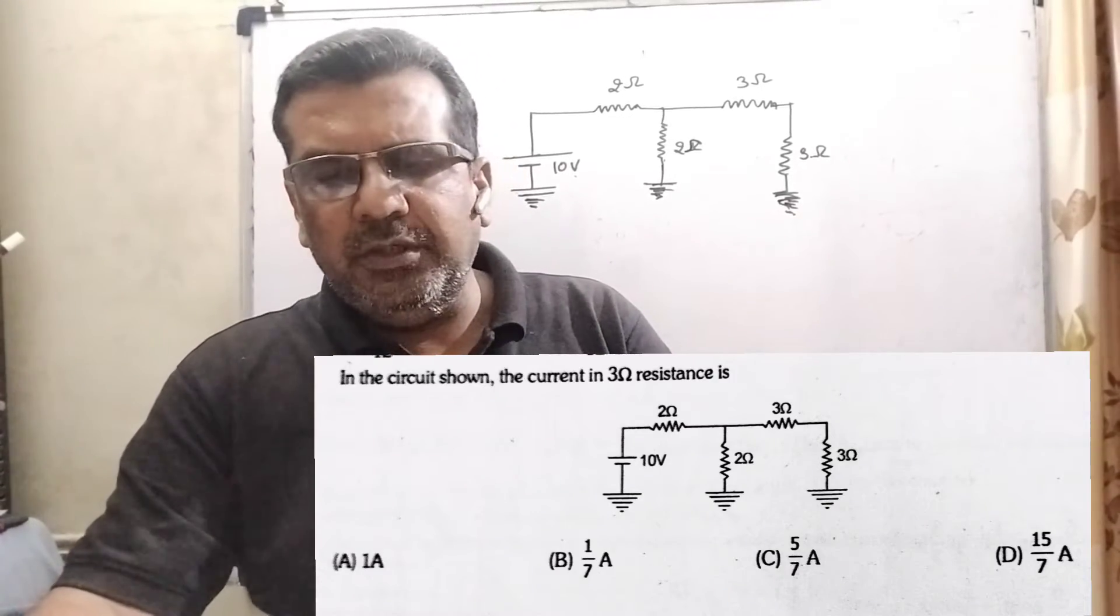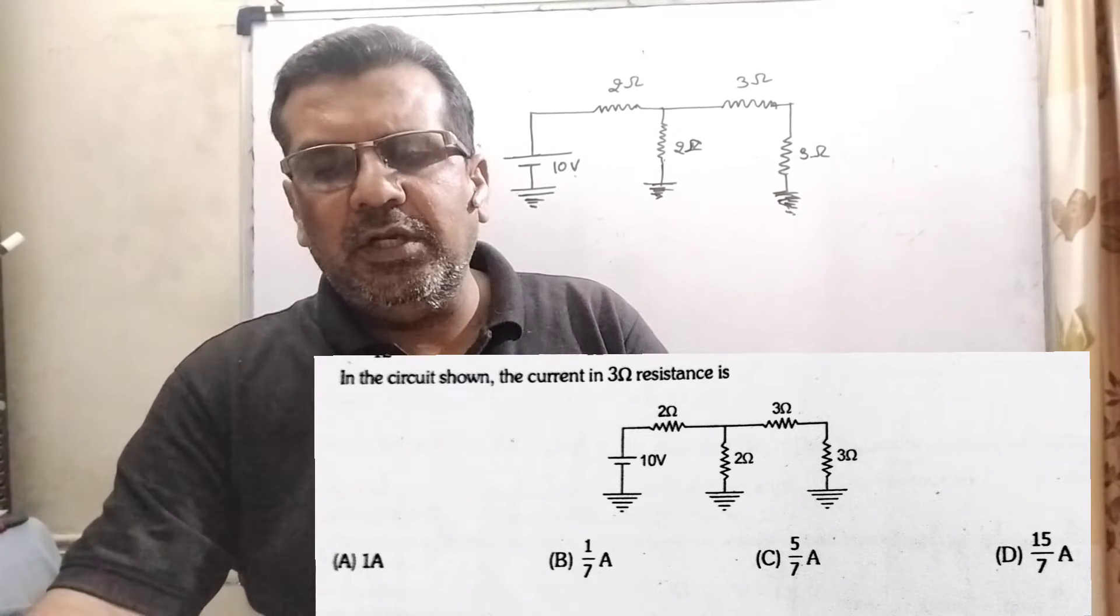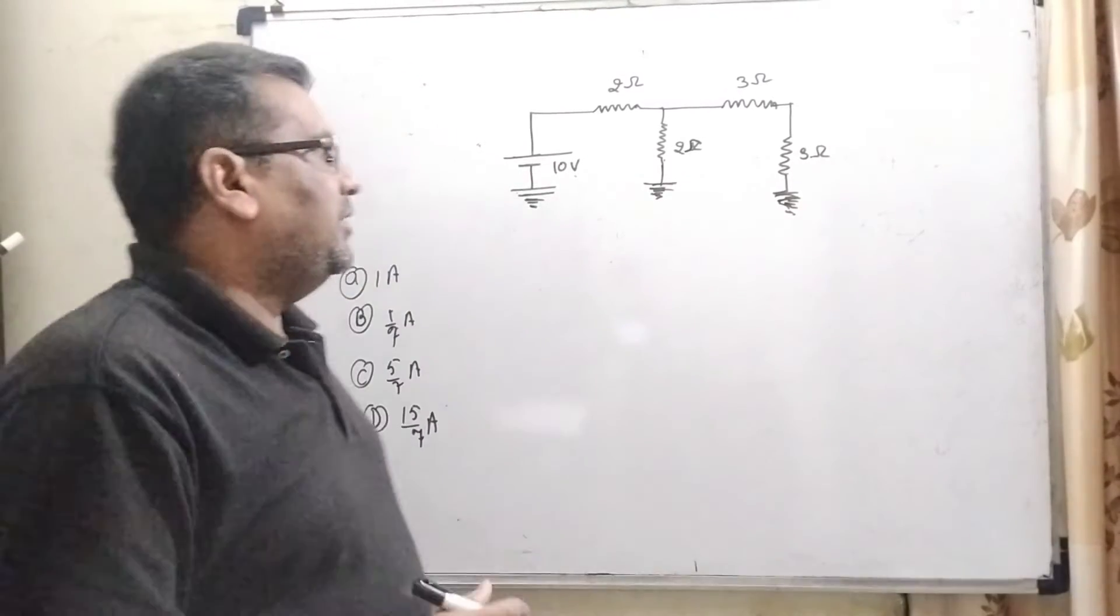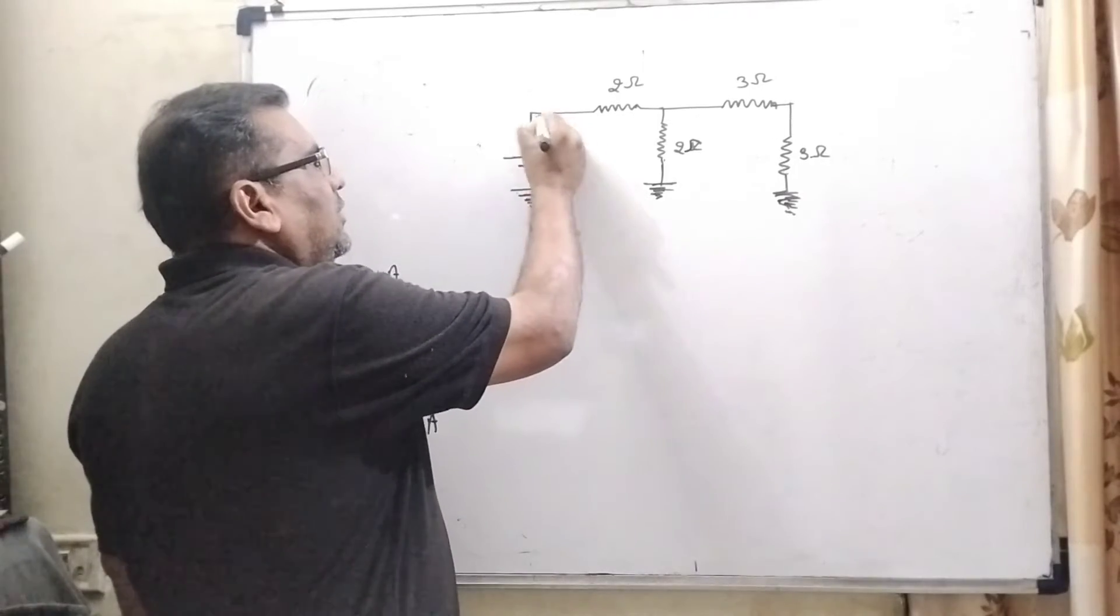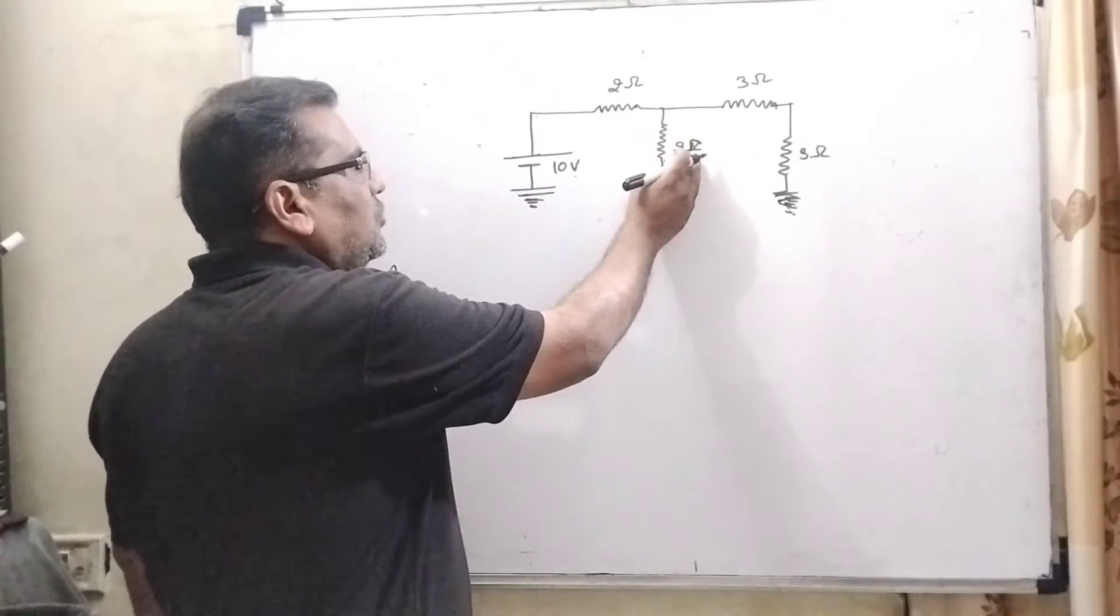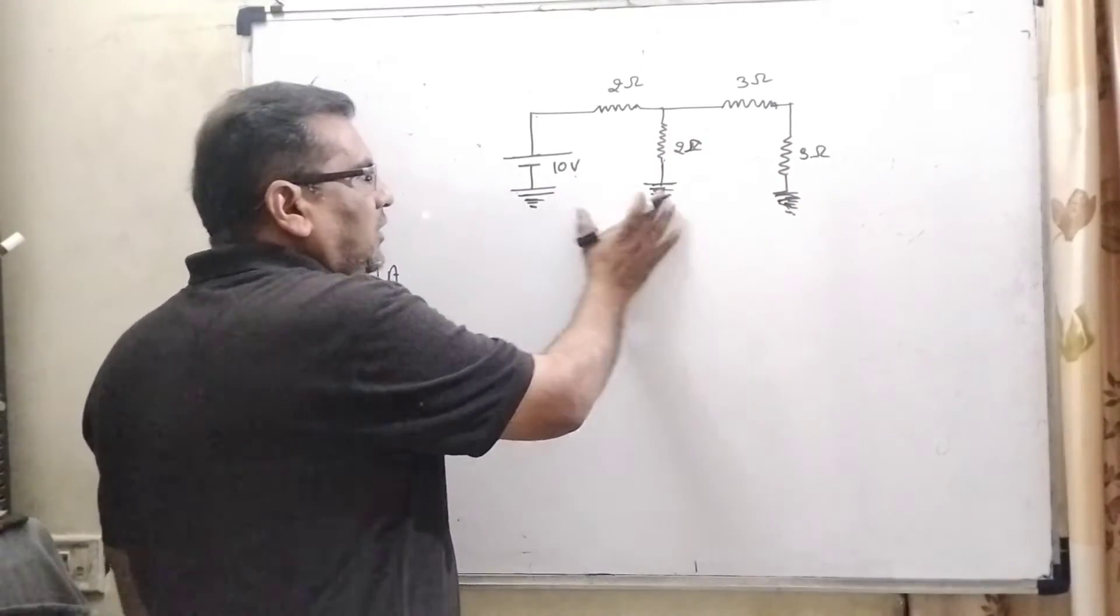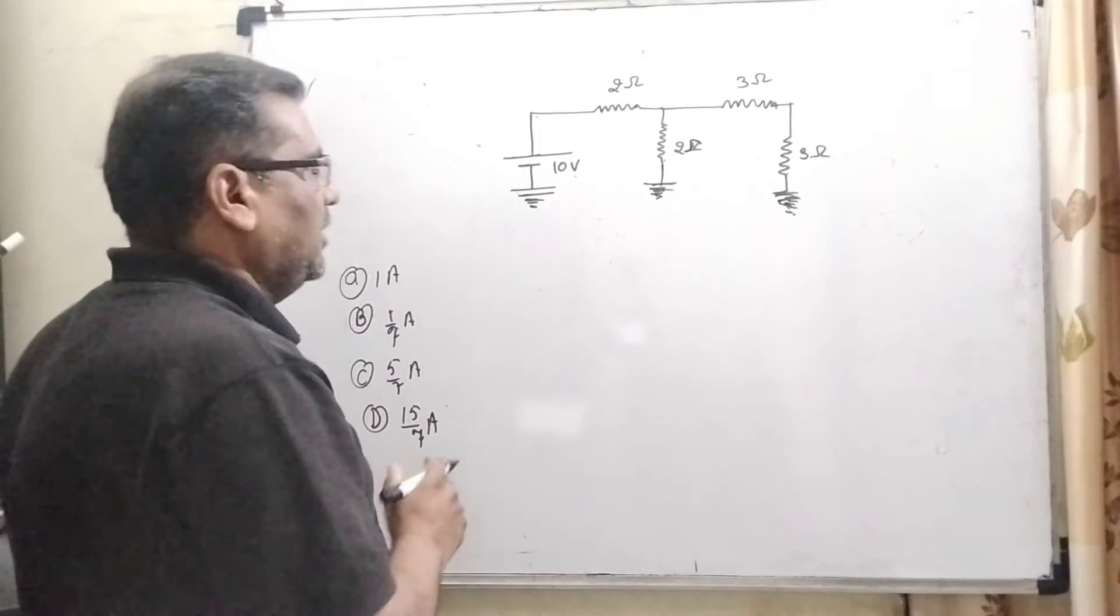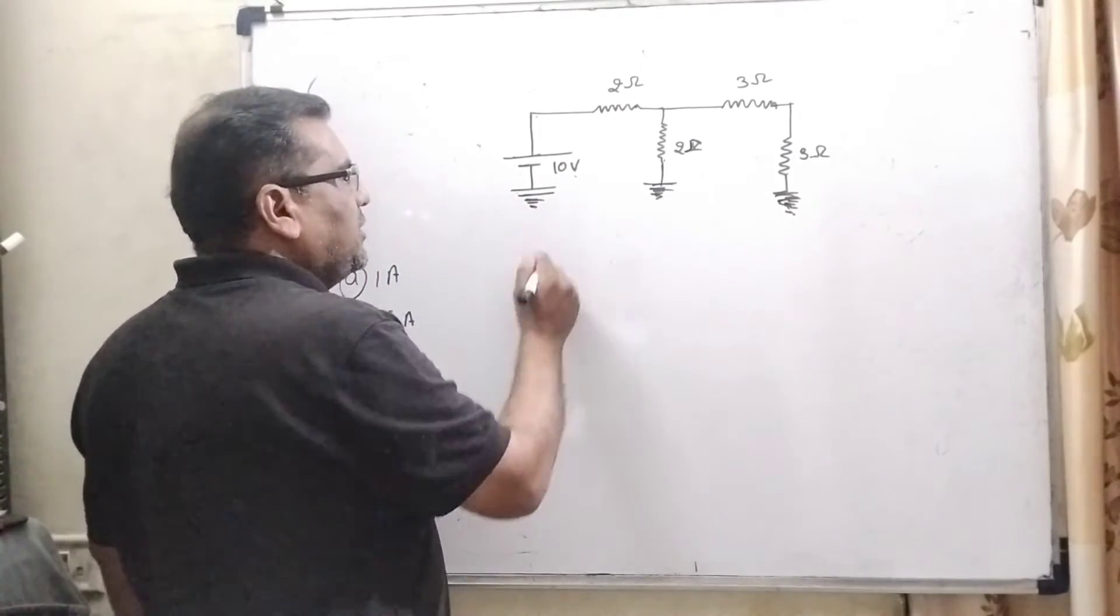Now here is the question. In the circuit shown, the current in 3 ohm resistance is - here we have given a diagram. Here a 10 volt battery is connected and 2 ohm resistance, here 2 ohm resistance, 3 ohm, 3 ohm resistance connected in this circuit. And all the three terminals are grounded, it means negative terminal. So we can connect them together because they are same potential.